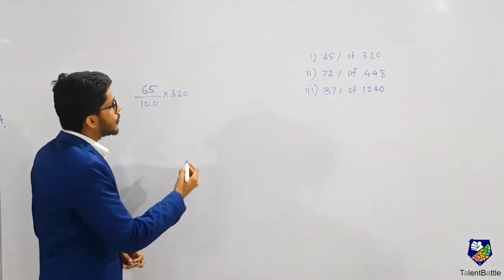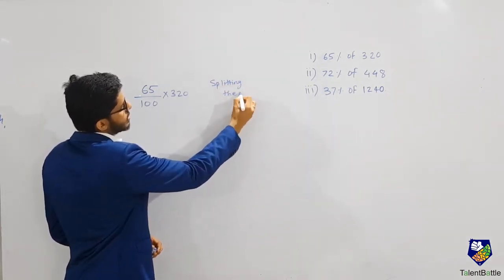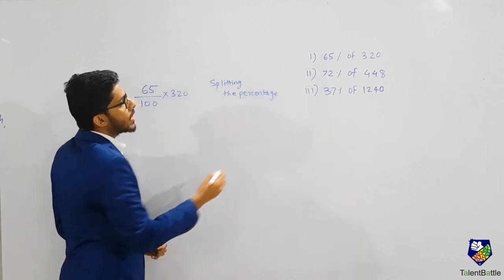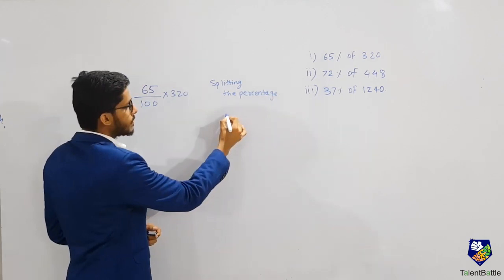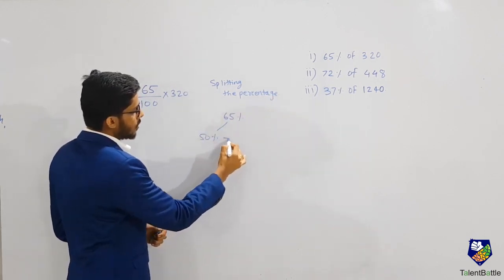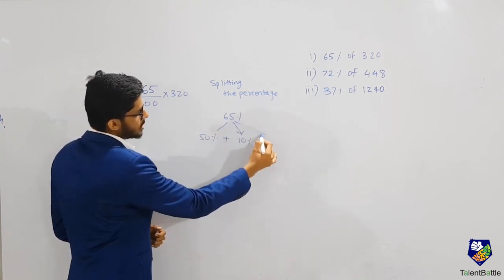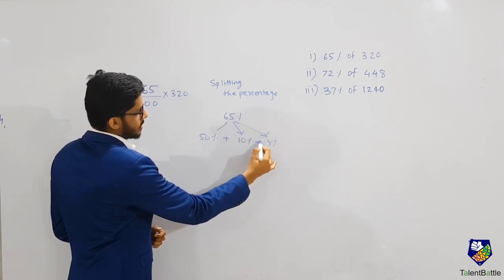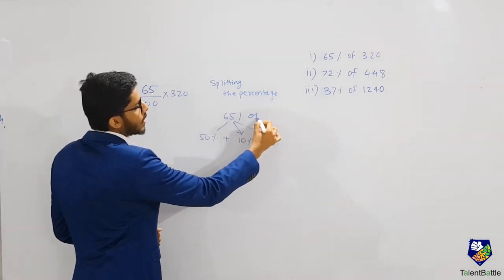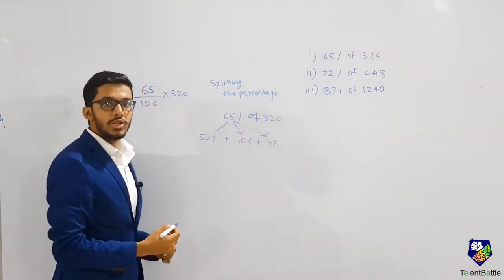The first method is the splitting the percentage method. What exactly is this method? For example, 65 percent can be split into 50 percent plus 10 percent plus 5 percent. So I need to calculate 65 percent of 320 by calculating each of these three parts separately.